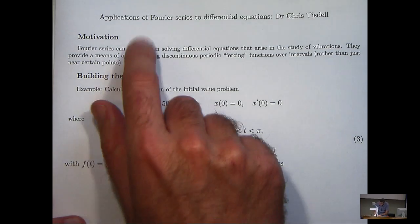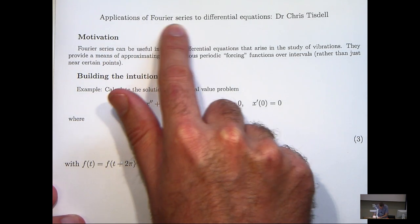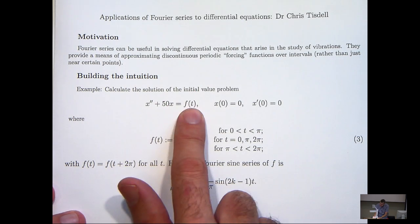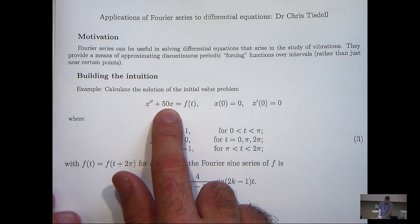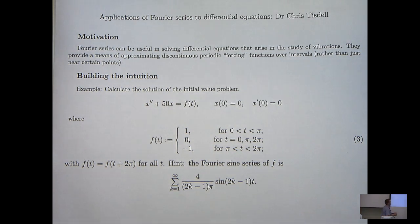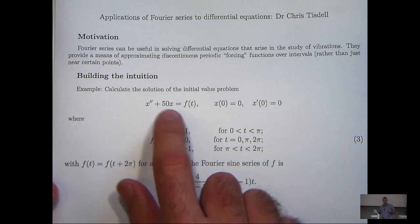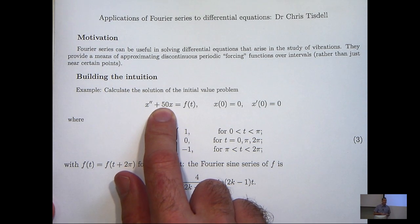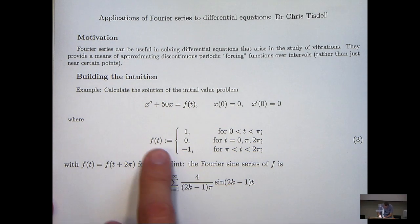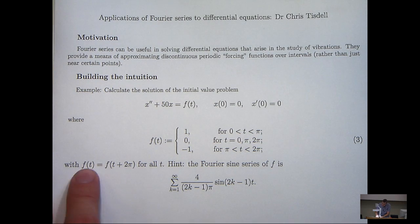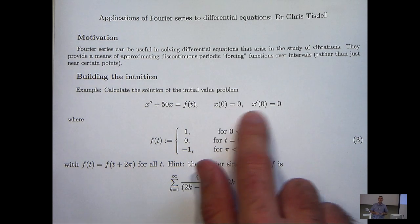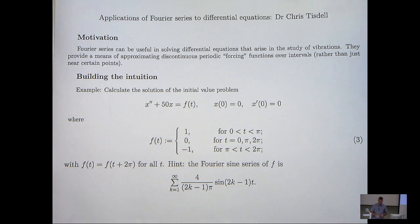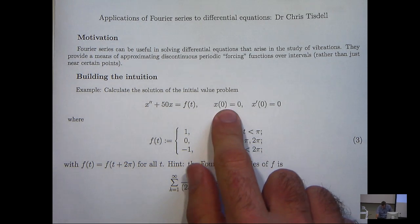In this video we're going to illustrate an application of Fourier series to differential equations. This is the differential equation we'll be looking at, subject to some initial conditions. Note that it's second order and linear. You can think of this differential equation as modeling the displacement x at time t of a spring-mass system. The 50 here represents the spring constant divided by the mass, and f represents an external forcing function that is periodic with period 2pi. The initial conditions may be interpreted as the system starting from rest with zero displacement.